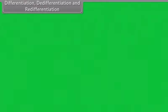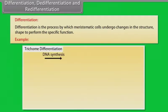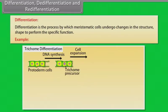Differentiation, dedifferentiation and redifferentiation. Differentiation is the process by which meristematic cells undergo changes in the structure, shape to perform the specific functions. For example, after the DNA synthesis of the protoderm cells, cell expansion takes place and it forms immature trichome. After that, nuclear migration takes place and then branching occurs and then it reaches to maturation stage.